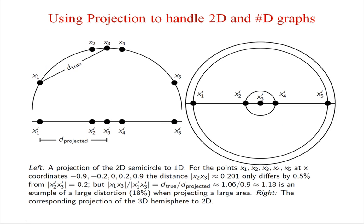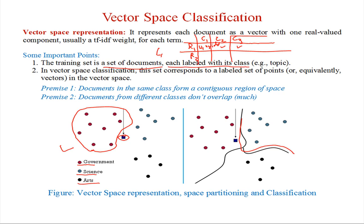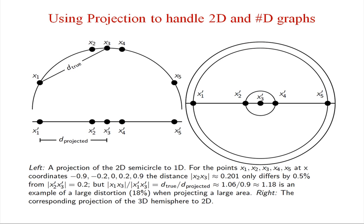The next important topic is dimensionality. Dimensionality is a major problem with documents because in vector representation, some documents may have very high numbers of words and others very few words. This creates a dimensionality gap, and for fast classification we need to reduce the dimensionality of the system.